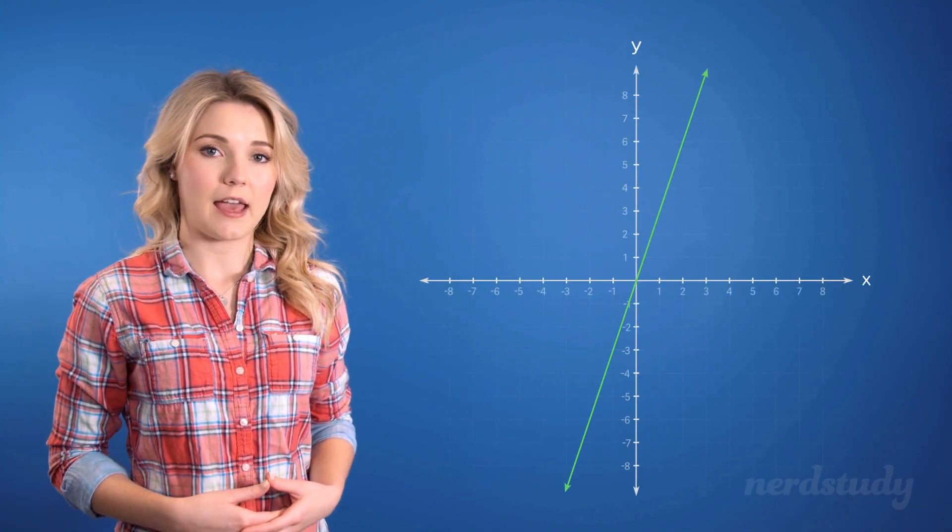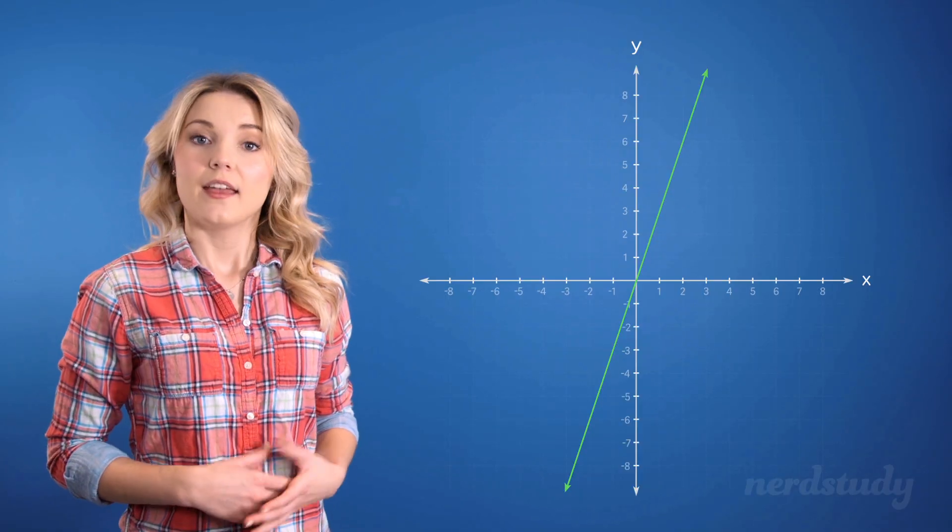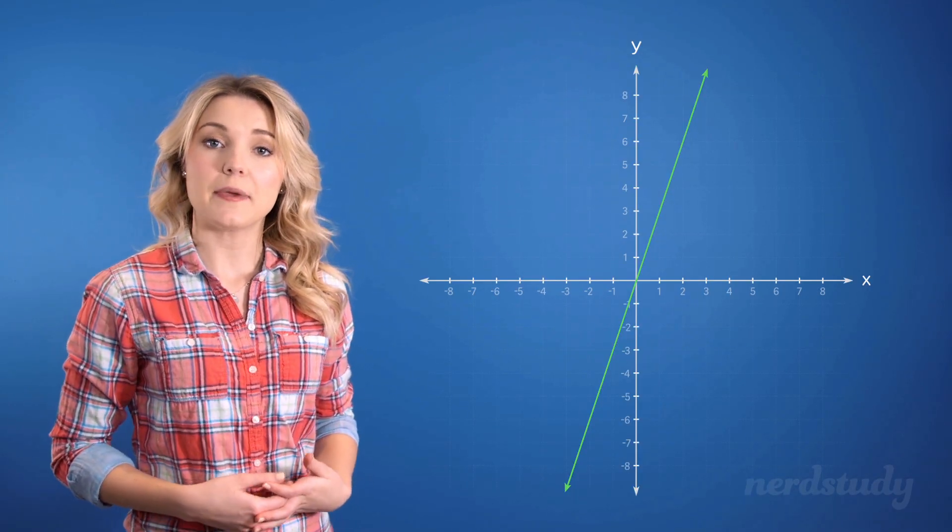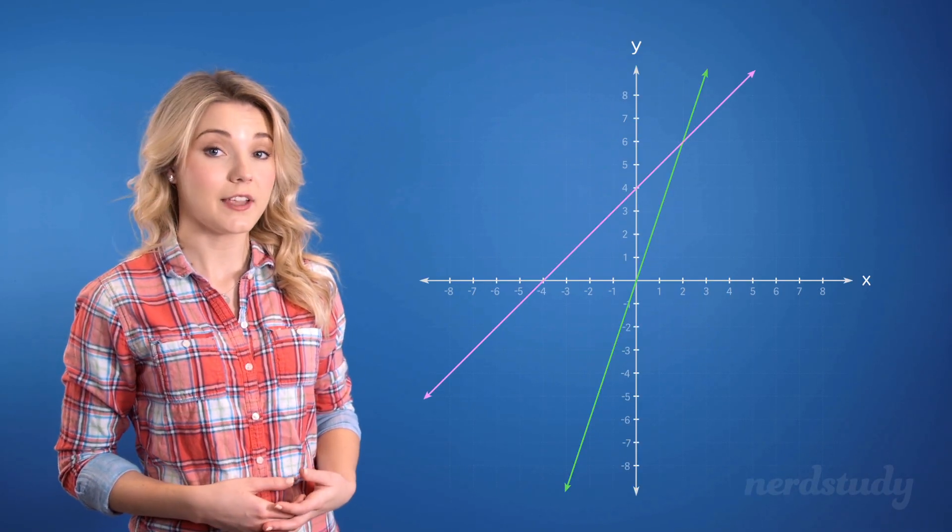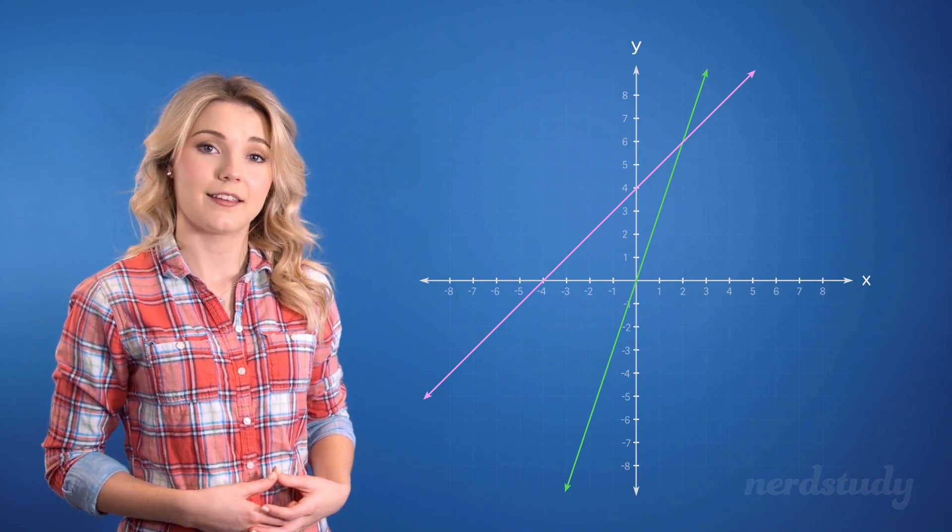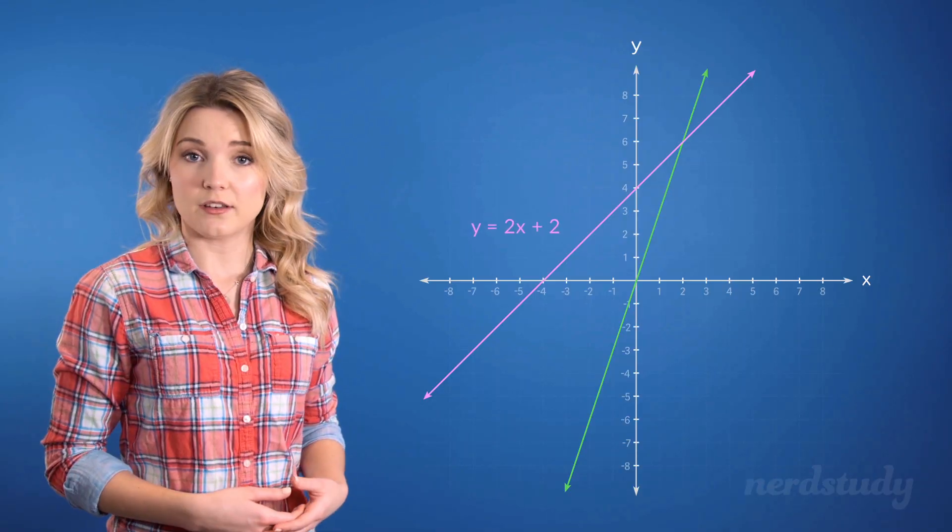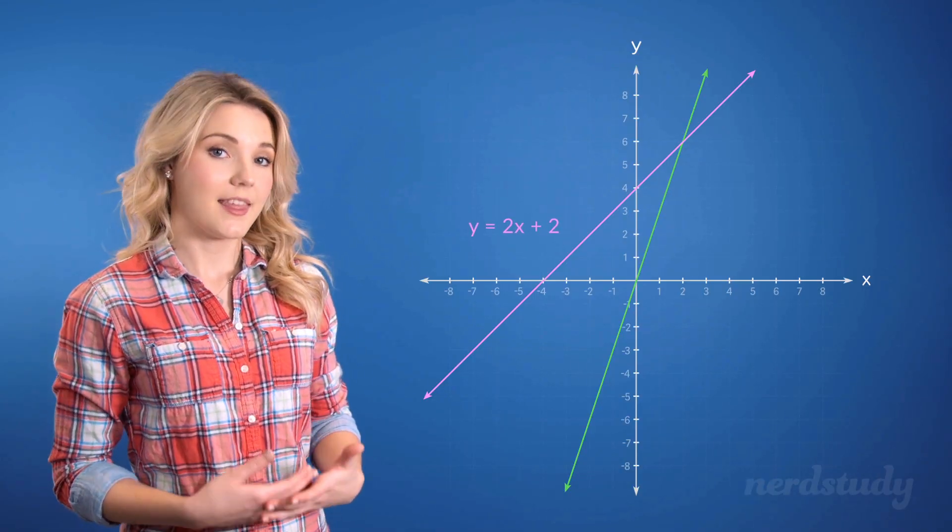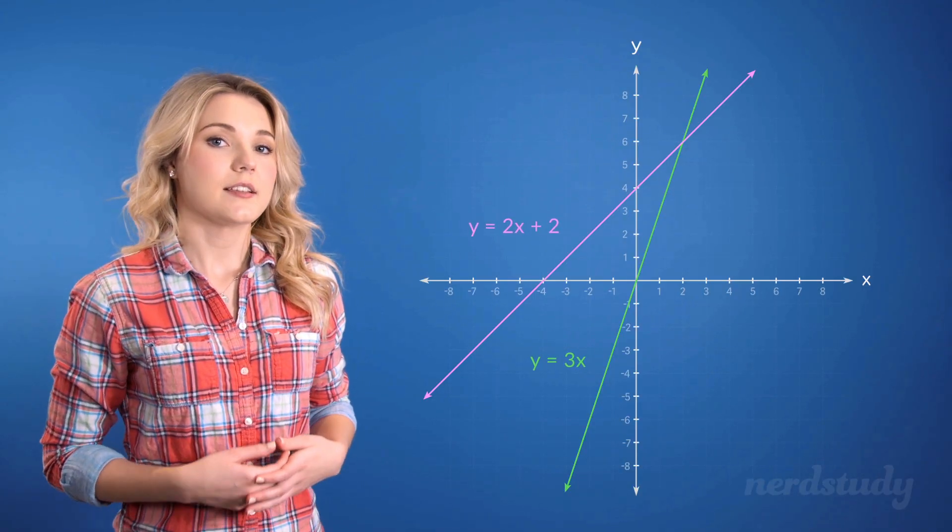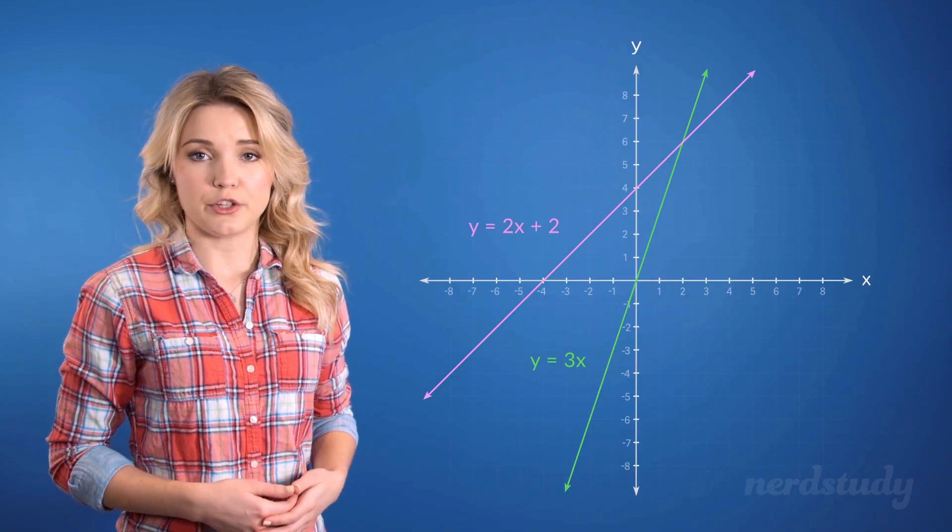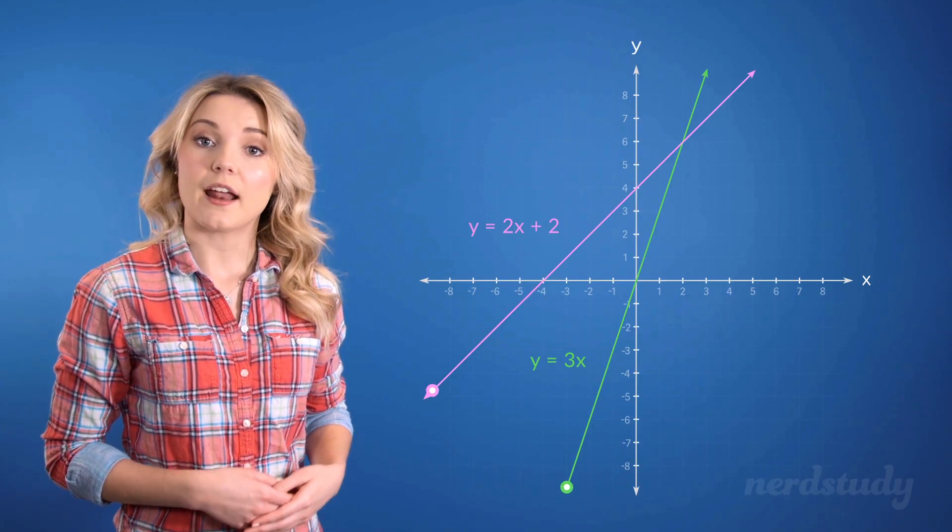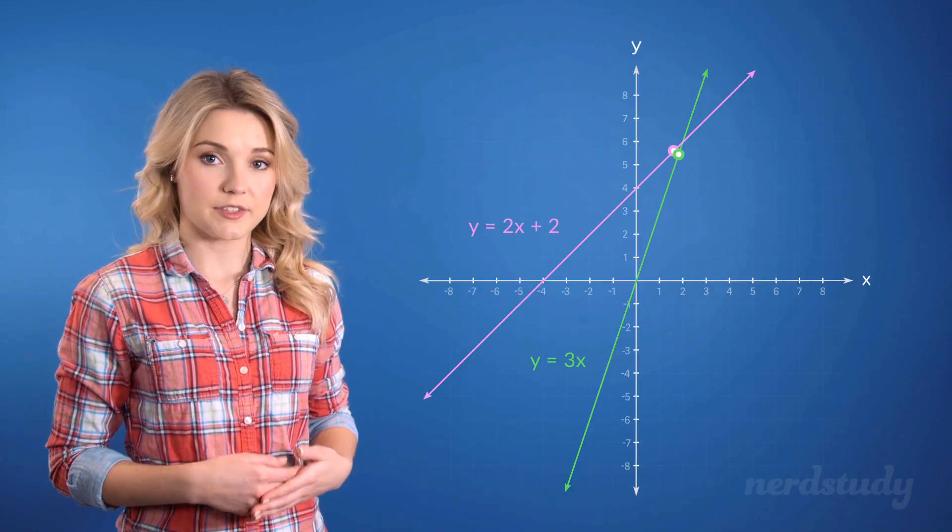So far we've been looking at just one line at a time on the Cartesian plane. Now, it's possible that there might be two lines that exist simultaneously on the same plane. So let's say one of these lines has the following equation and the other line has this equation. Since the two lines are not parallel to each other, we can assume that at a certain point the lines will intersect each other.